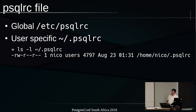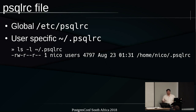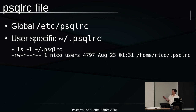The other file we're going to talk about is the PSQLRC file — that's mainly what this talk is about. There are two locations where you can find this file: either a global file that normally lives in /etc/psqlrc, or in a user's own home directory. If you use a configuration management tool like Ansible, it's easy to deploy that file. The file permissions don't matter here — as long as the user has read rights, it should be usable.